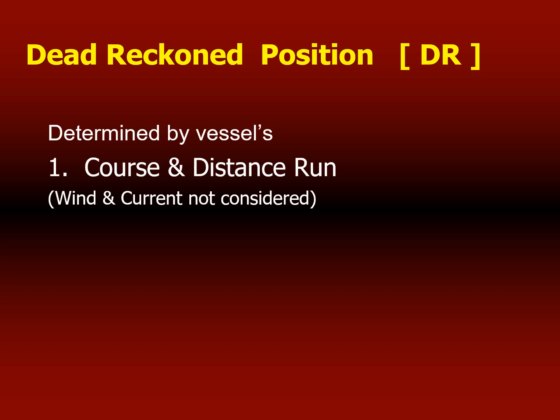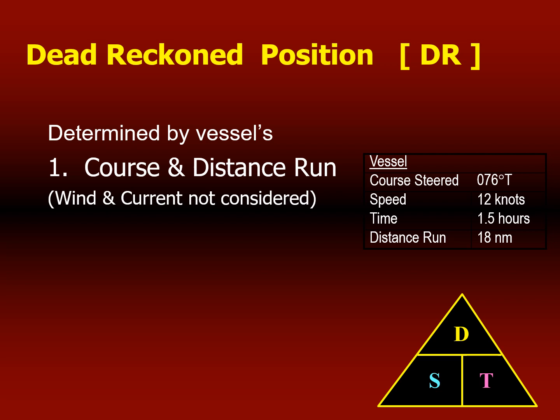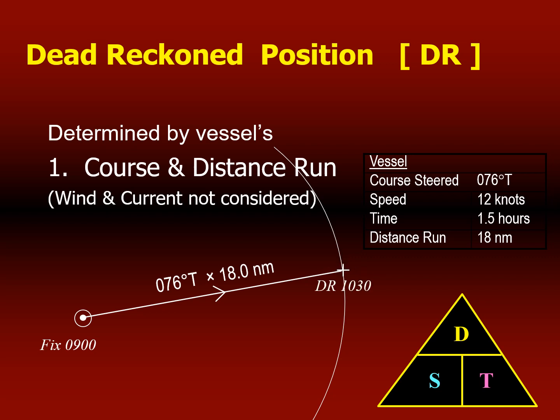Dead reckoning position is determined by the vessel's course and distance run where wind and current are not considered. We assume the vessel's course will not be influenced by prevailing wind and currents. For example, if your vessel's fixed position is known at 09:00, and the speed is 12 knots over 1.5 hours, the distance run is 18 nautical miles. Steering course 076°, you would expect your vessel to be at that position by 10:30 — but this is seldom the case at sea, as the vessel will be influenced by wind or current.